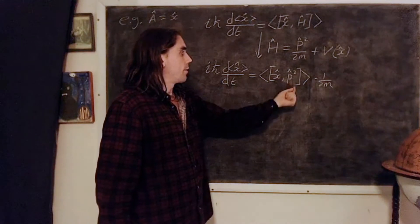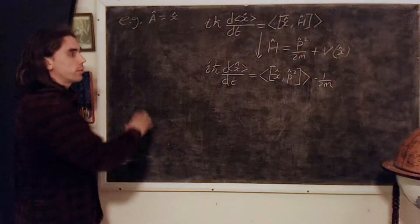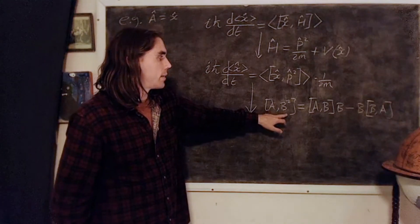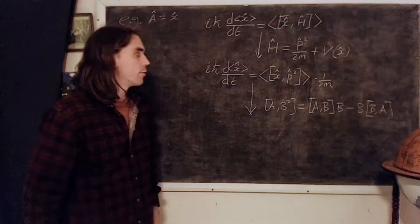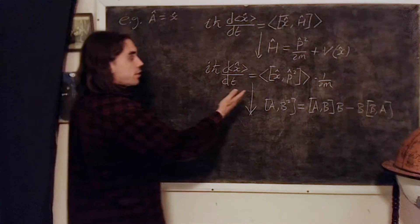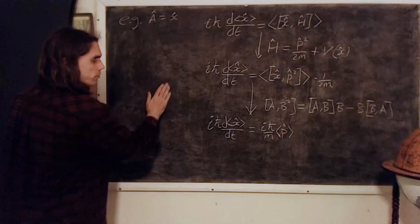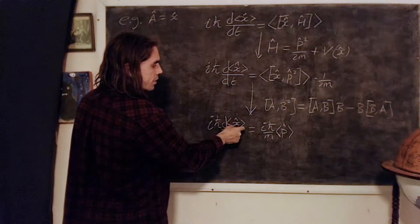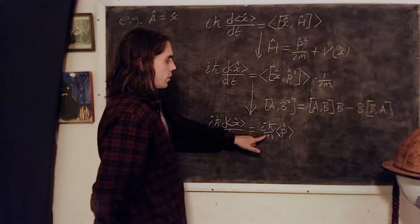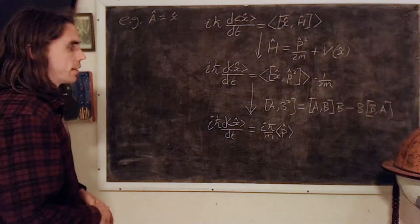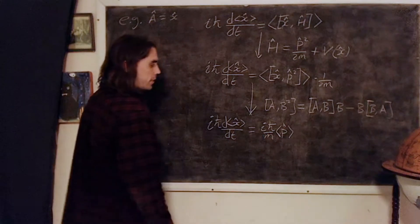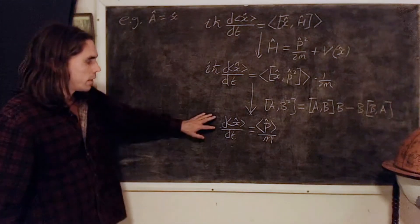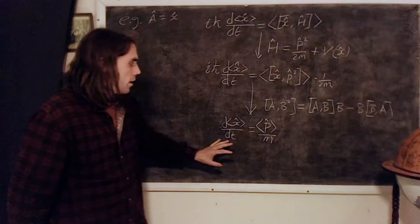To evaluate this, we use the result that for matrices A and B, A commuted with B² is given by a standard relation, which you can derive fairly straightforwardly. Substituting in and using our canonical commutation relation gives us the result: iħ d⟨x⟩/dt = (iħ/m) ⟨p⟩. We can cancel the iħ factors to give the result dx/dt = p/m.